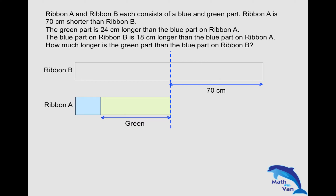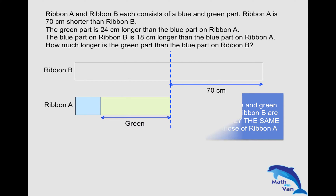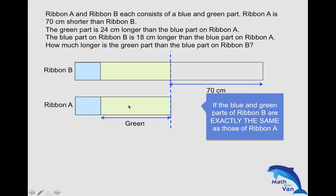Right now, you may want to imagine: if the blue and green parts of Ribbon B were exactly the same as those of Ribbon A, what would happen? You would basically have two equal parts of green and blue, and A and B would have equal length. But in actual fact, we know that is not the case. So whatever the difference of 70 cm must come from — when we compare blue and blue, B is longer. Likewise, when comparing the green parts of both ribbons, the green part on Ribbon B must be longer than the green part on Ribbon A.